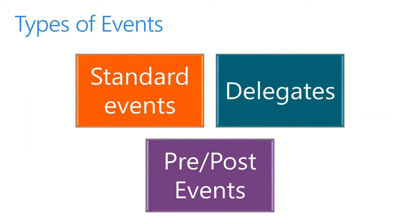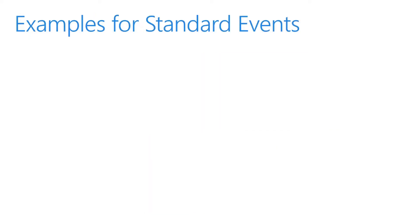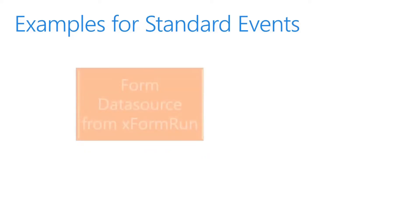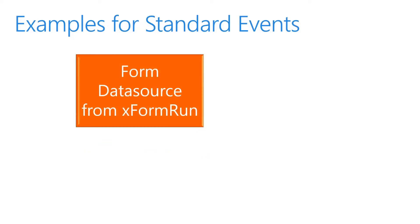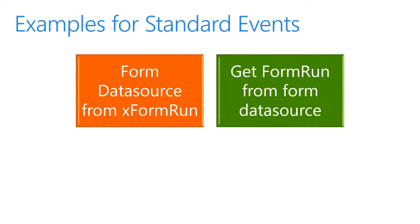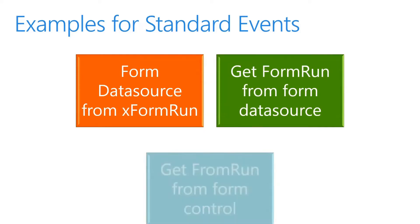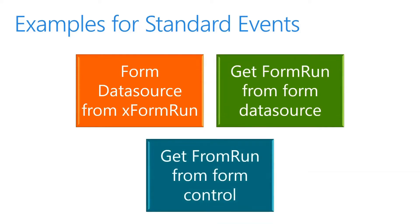There are three types of events: standard events, delegates, and pre and post events. The following are a series of standard events and code suggestions for the process form data source, form run, get form run from data source, and get form run from form control.